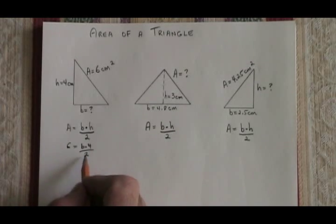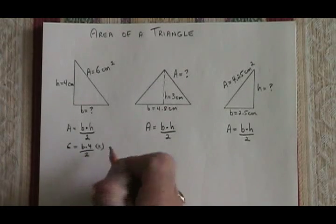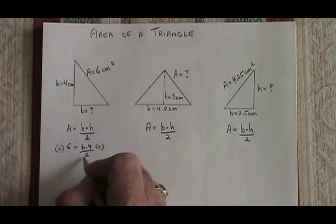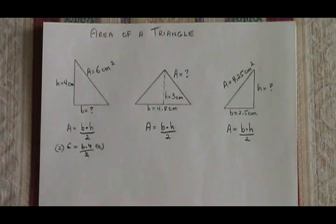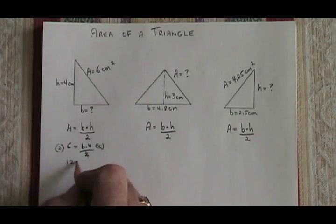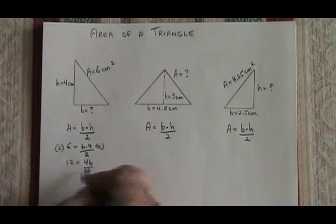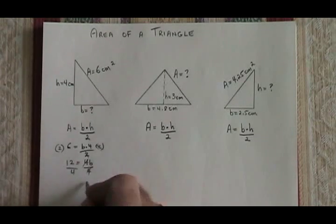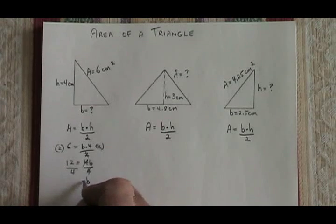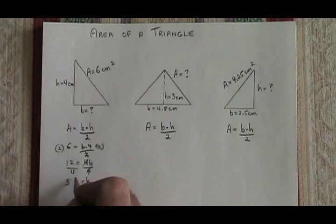Since this has a fraction where we're dividing by 2, we can simplify it by multiplying both sides of the equation by 2. These 2's cancel and we end up with 12 equals 4B. Dividing both sides by 4, we find that our base is equal to 3 centimeters in length.